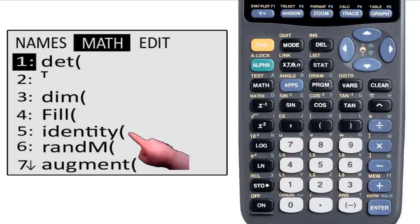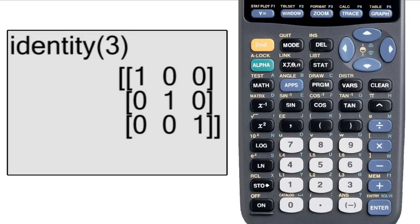The identity command returns the identity matrix with the dimension that you specify. So if you type in identity 3, it returns the 3 by 3 identity matrix.